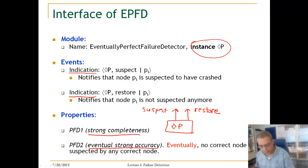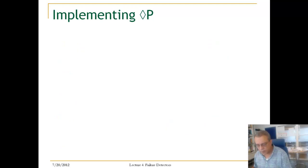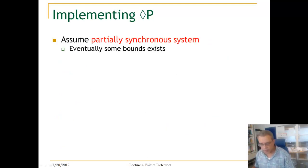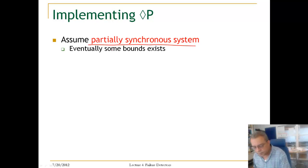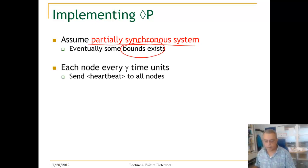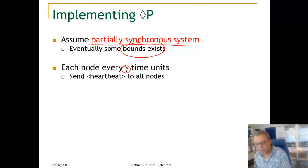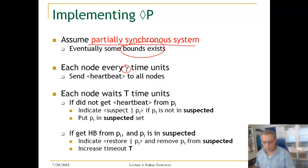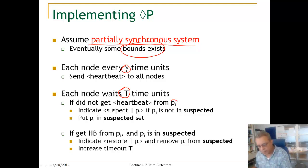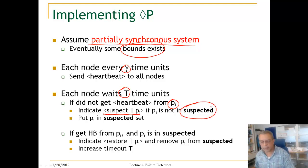Eventually, no node will be suspected by any correct process. Looking at the implementation of an eventual failure detector, we assume a partially synchronous system where bounds exist. Each node, every gamma time units, will send a heartbeat. Each node will wait a T time unit, and if it did not get a heartbeat from a process P_i during this period T, it will suspect P if P is not already in the set of suspected processes.